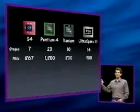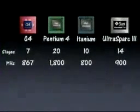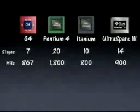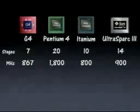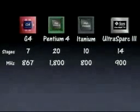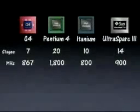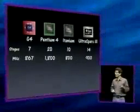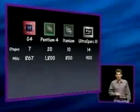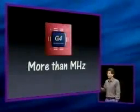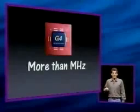Going back to compare our four processors: the Pentium 4 runs at 1.8 GHz with 20 pipeline stages. Intel's next-generation Itanium chose to go with only 10 pipeline stages and runs at 800 MHz. The Ultra Spark 3 has 14 pipeline stages at 900 MHz. The G4 is an extremely efficient design with only seven pipeline stages, yet runs at the same speed as processors with much longer pipelines. Performance is more than just MHz — don't be fooled by the Megahertz Myth.